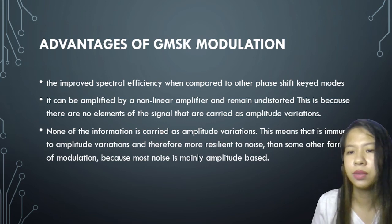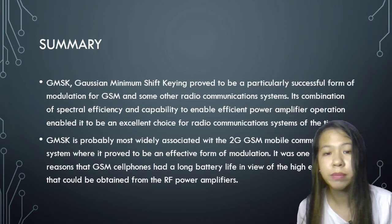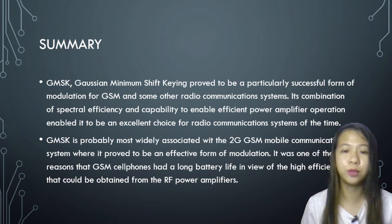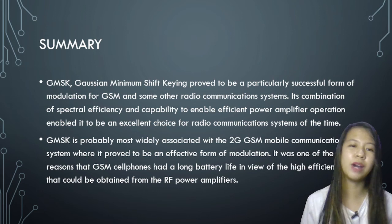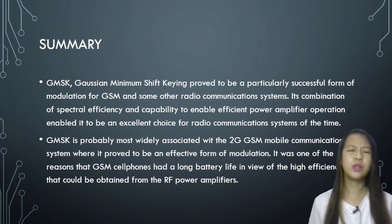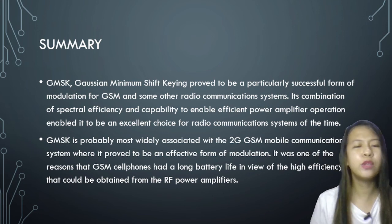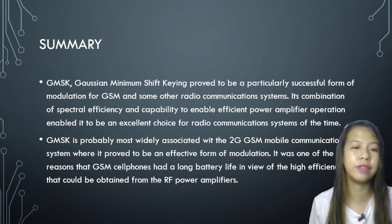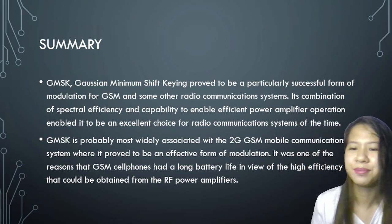And now, lastly, in the summary: GMSK or Gaussian Minimum Shift Keying proved to be a particularly successful form of modulation for GSM and some other radio communications systems. Its combination of spectral efficiency and capability to enable efficient power amplifier operation enable it to be an excellent choice for radio communication systems of this type. GMSK is probably most widely associated with the 2G GSM mobile communication system where it proved to be an effective form of modulation. It was one of the reasons why GSM cellphones had a long battery life in view of the high efficiency that could be obtained from the RF power amplifiers.